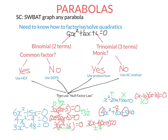To factorise using the AC method, we split up the middle term by finding two numbers that multiply to negative 20 and add to 8. Those two numbers are 10 and negative 2. So I'm going to write 8x as 10x minus 2x. Note it doesn't matter the order you write them. Now I factorise the first two terms and the last two terms separately using the highest common factor.